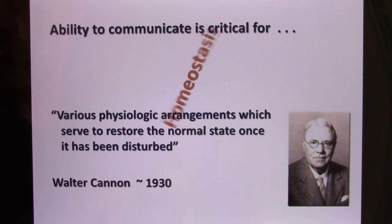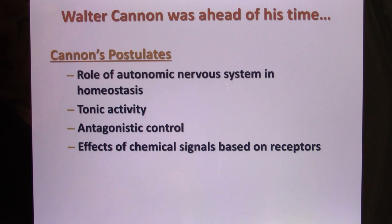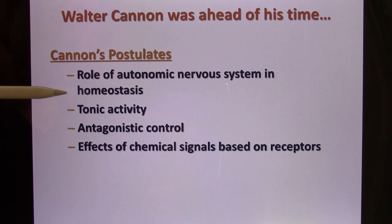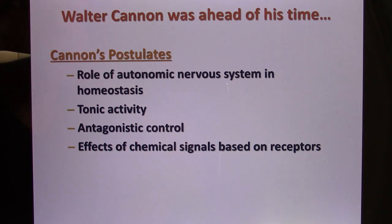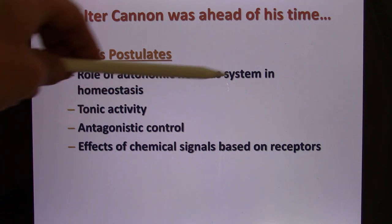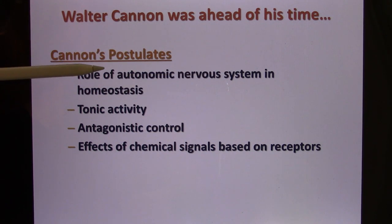So we talk about homeostasis — a stable environment. He not only said we have homeostasis, he also predicted what your body does to maintain homeostasis. That's what makes him the father of physiology. He says your body has a nervous system called the autonomic nervous system, and that's still true after a hundred years.